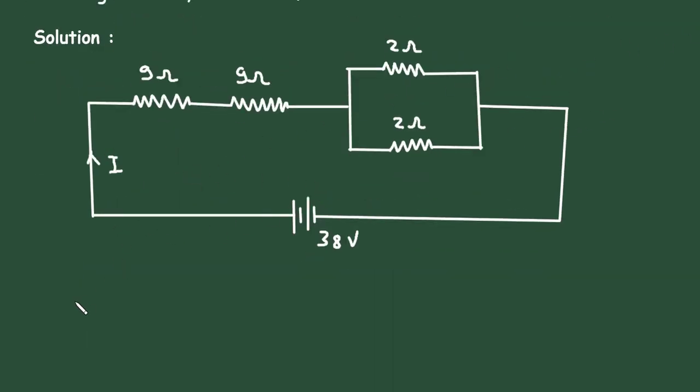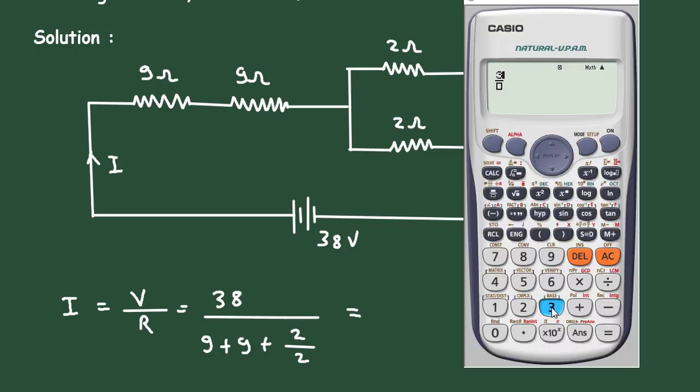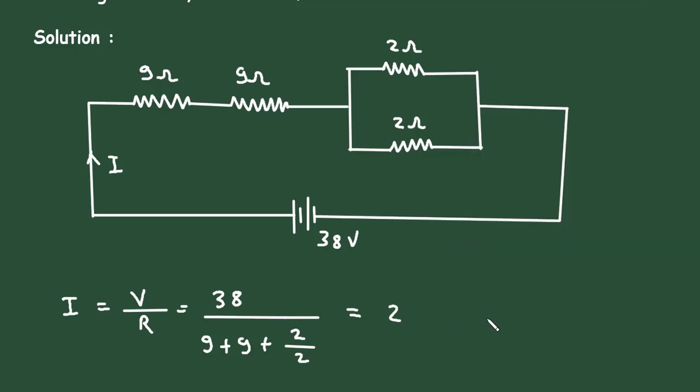So first of all, according to Ohm's law, current is equal to voltage divided by resistance. The value of voltage is 38V and the value of resistance will be 9 plus 9 plus... now this 2 ohm and this 2 ohm are connected in parallel, so it will be 2 divided by 2. So it is equal to 38 divided by 9 plus 9 plus 1. So it is 2 ampere. The total current I is equal to 2 ampere.